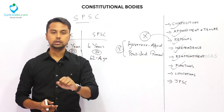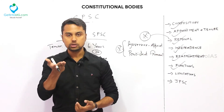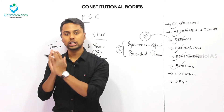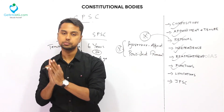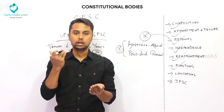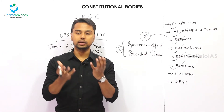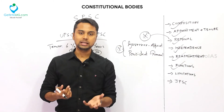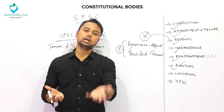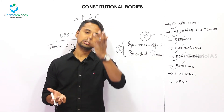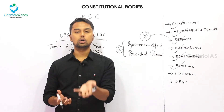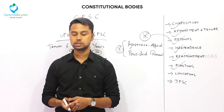Also, there is a non-constitutional body known as the State Vigilance Commission — an anti-corruption body. When there is a dispute or conflict of opinion between SPSC and the State Vigilance Commission, the State Public Service Commission always takes the higher end, because it is a constitutional and permanent body.